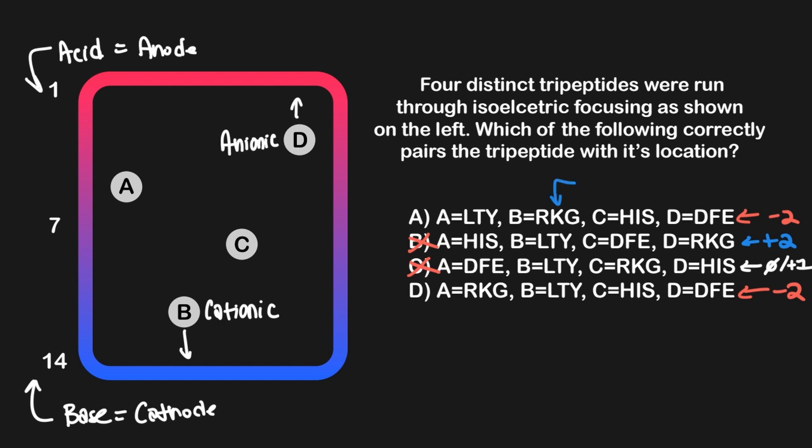From there, only answer choice A lists peptide B as cationic, so it must be the correct answer since we know that peptide B is cationic at neutral pH, while answer choice D has a neutral peptide listed as peptide B instead making it wrong.